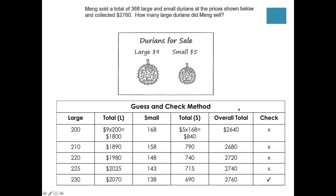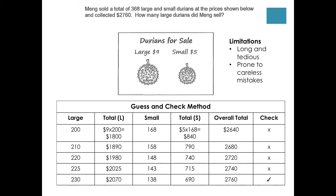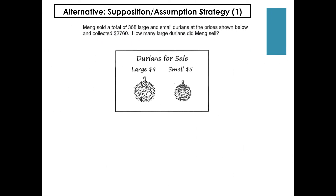It's possible to use the guess and check method, but there are many limitations. Number one, you can see that it's long and tedious. Number two, students are prone to making careless mistakes. If they make a careless mistake after spending 15–20 minutes on this question, they lose all the marks. So I'm going to show you the alternative method, which is the assumption or the supposition method.